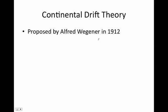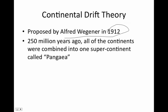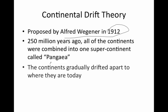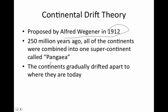Continental drift theory was proposed by a man named Alfred Wegener in 1912. He said that 250 million years ago the continents were basically one supercontinent called Pangea, and they gradually drifted apart.